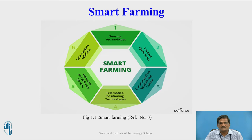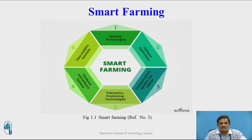One is sensing technology that senses soil pH value, temperature, light, humidity, etc. Software applications are used to store and manage farm information or farm products. Communication technologies are used to communicate between different agencies and with neighboring farmers. Telematics positioning technologies also enable farmers to go for smart farming, and hardware and software systems help in setting up IoT in their farm field. Data analytics solutions help to analyze information received from different locations.